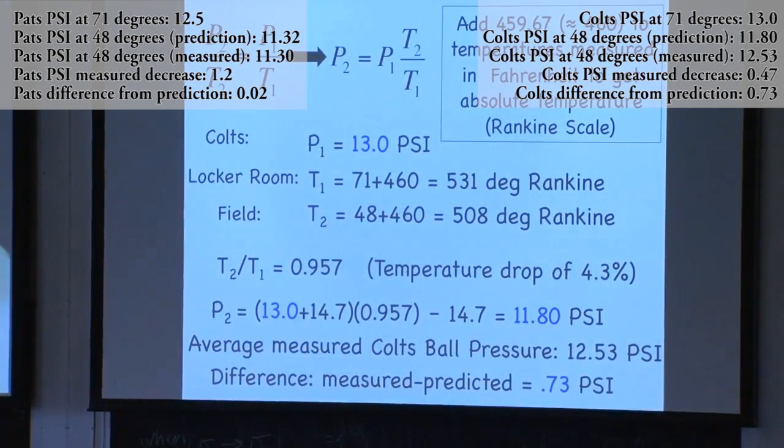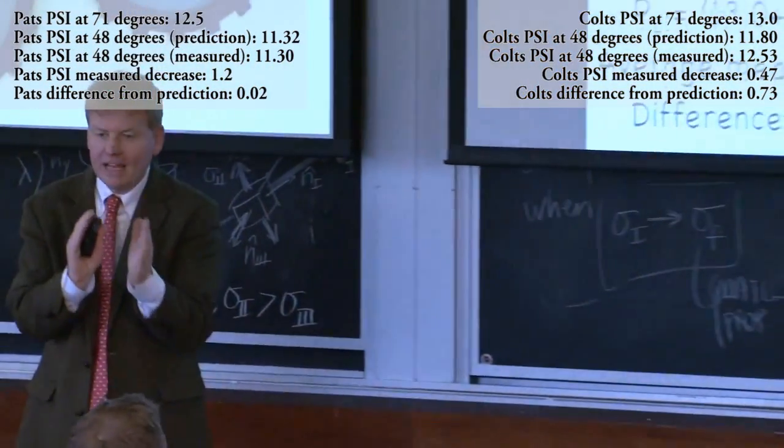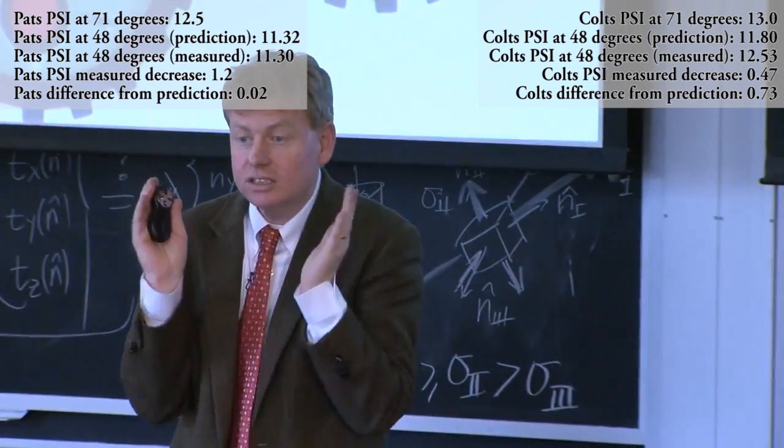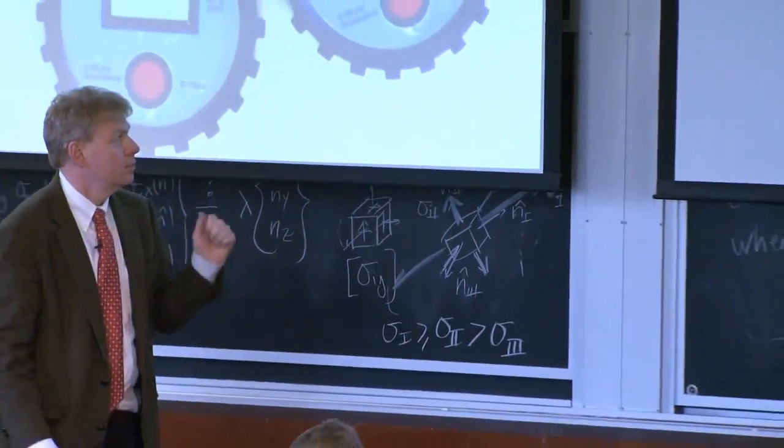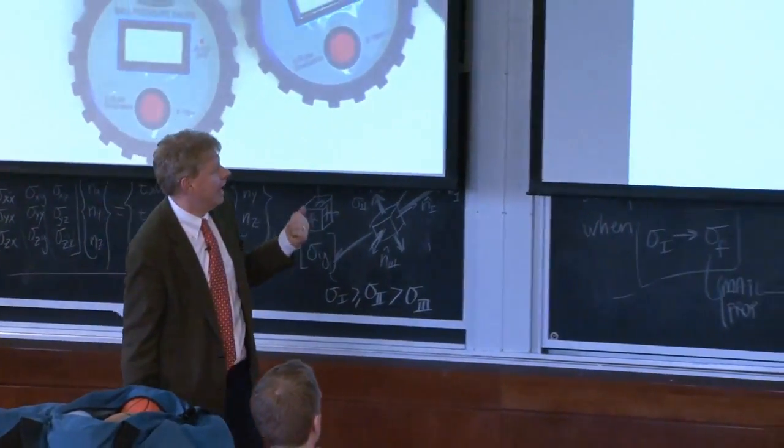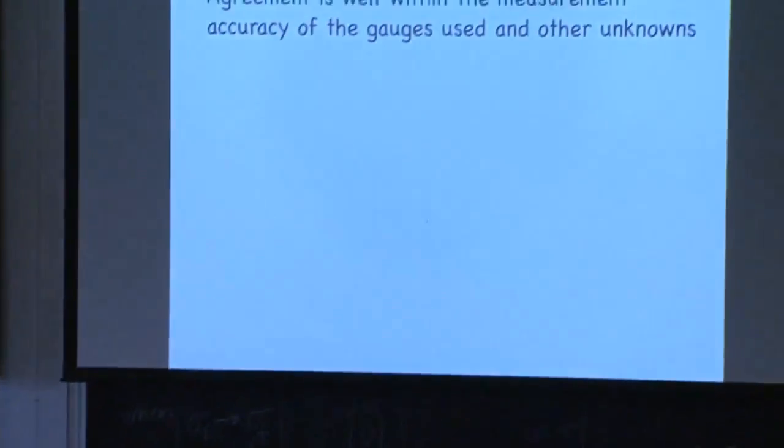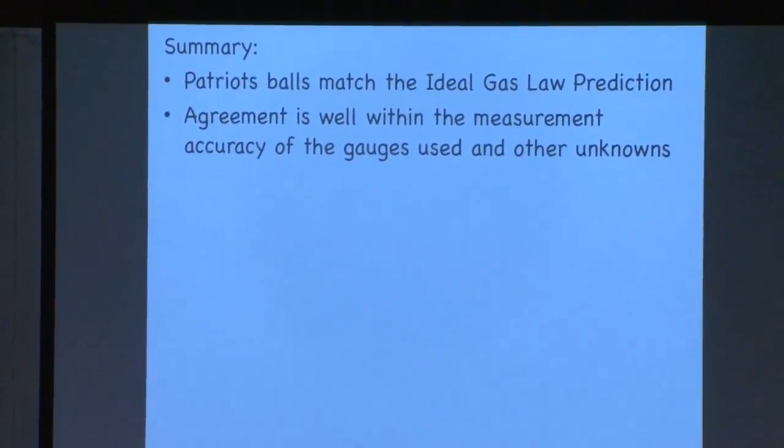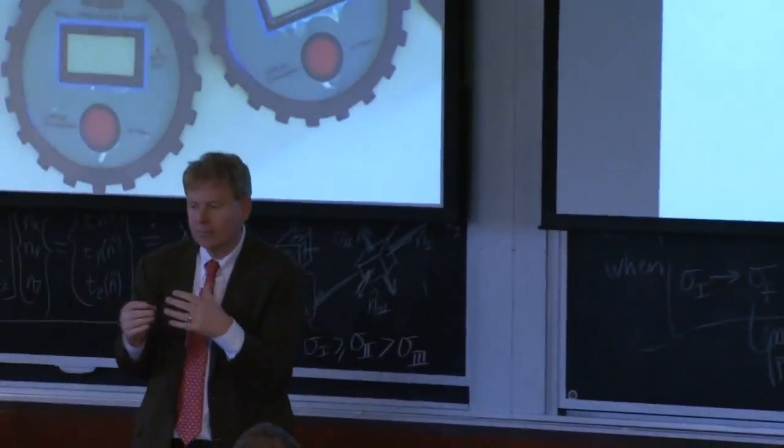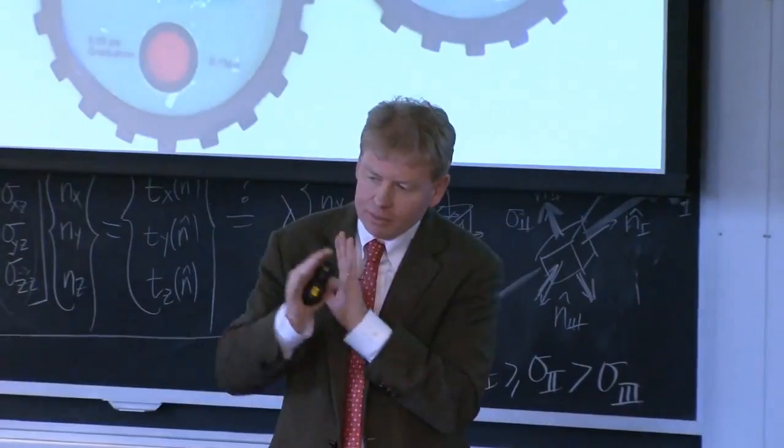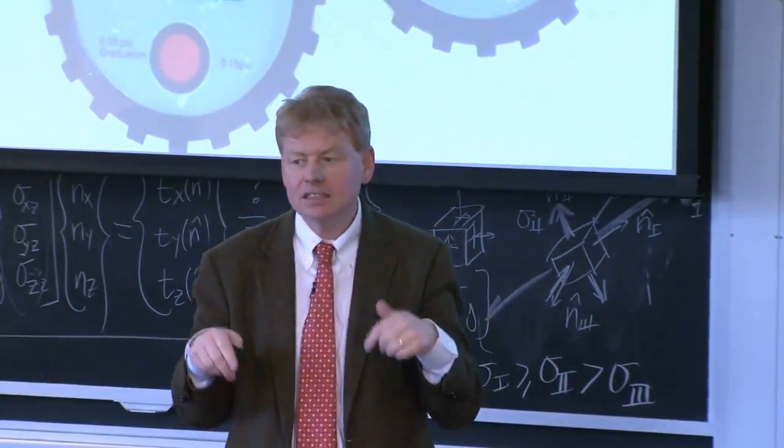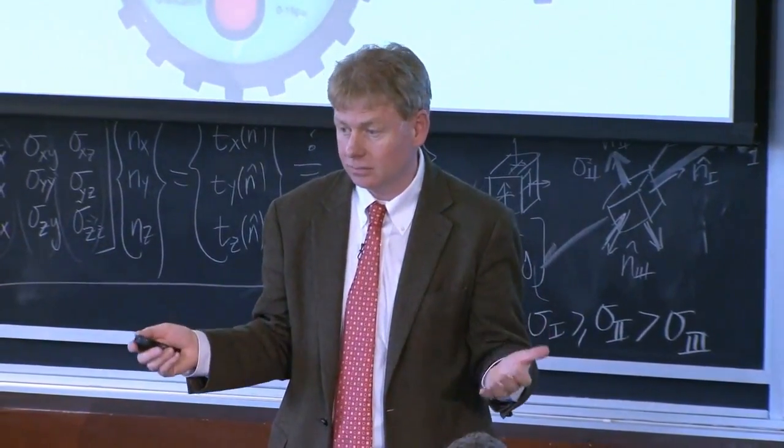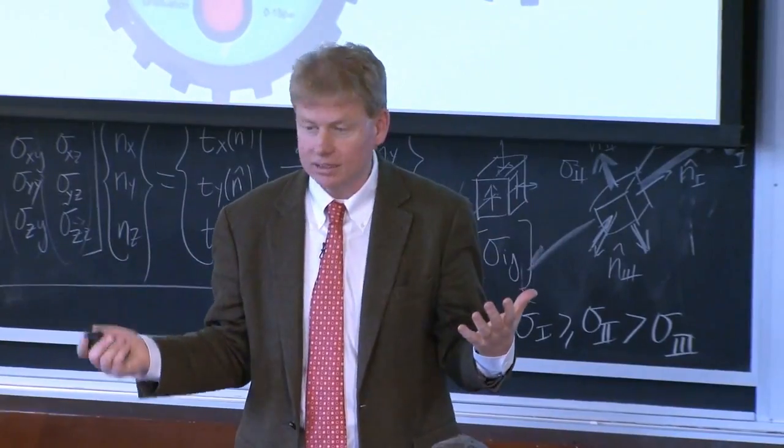The Patriots balls match the prediction. The Colts balls are the ones that don't. Patriots balls match the ideal gas law prediction. The agreement is well within the measurement of the gauges and other unknowns. There are a lot of unknowns here: calibration of the gauge, which gauge, the temperature in the locker room, various temperatures, nothing is written down, timing. If I had to stake my reputation and career on it, the Patriots balls match the ideal gas law prediction. And I don't know why people can't get that.